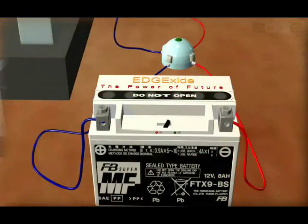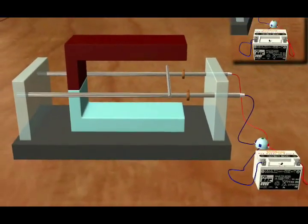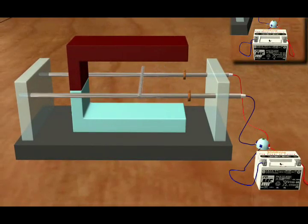As soon as we switch on the battery and the current flows through the conductor, it starts moving towards the left.